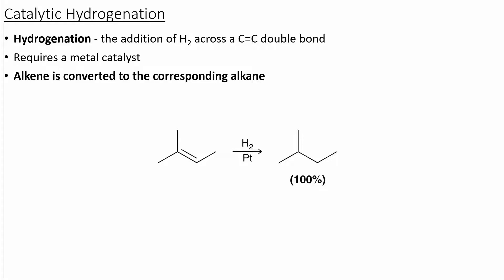We generally use a metal catalyst for this reaction. We can convert an alkene to an alkane using hydrogen and platinum. This converts two sp2 carbons into two sp3 carbons.